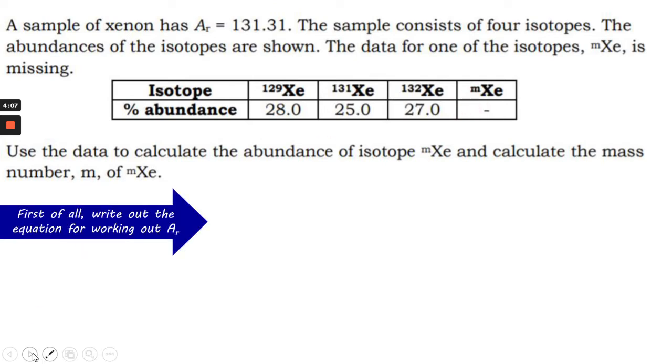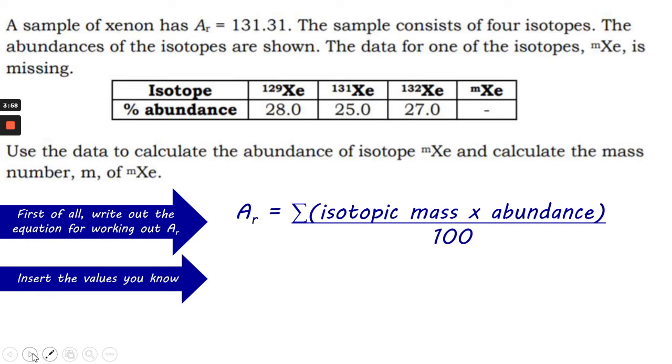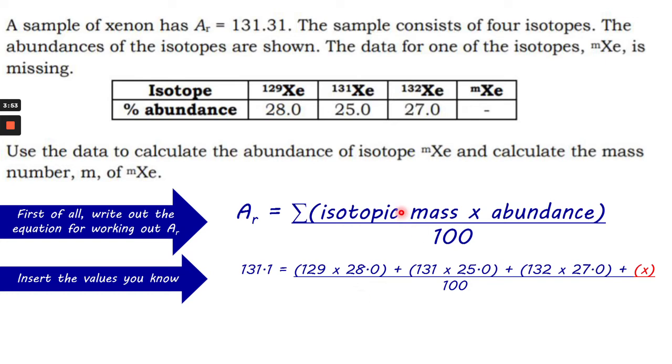So the first thing to do is to write out the equation for working out the atomic mass as you've learned, either from textbook or flashcard. And then you can insert the values that you already know from the question. So obviously the isotopic mass is these numbers and the abundance is these numbers. So what this means here is sigma, as that stands for sum of. So you multiply the isotopic mass times its abundance of 129 times 28. You do the same for all the others.